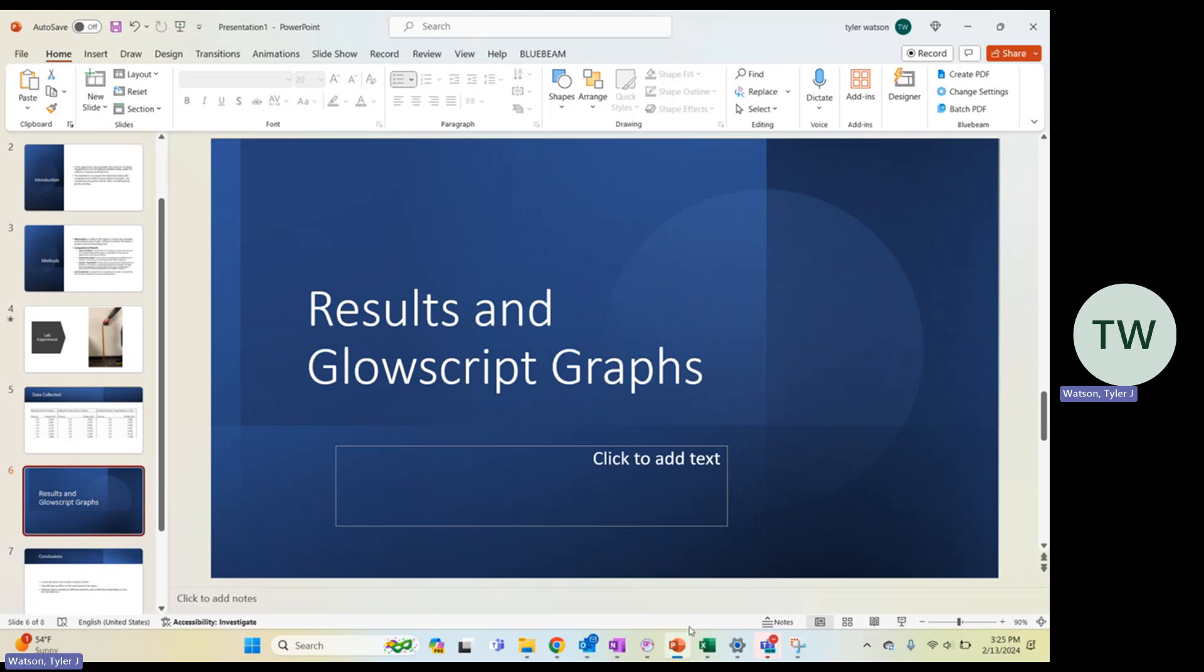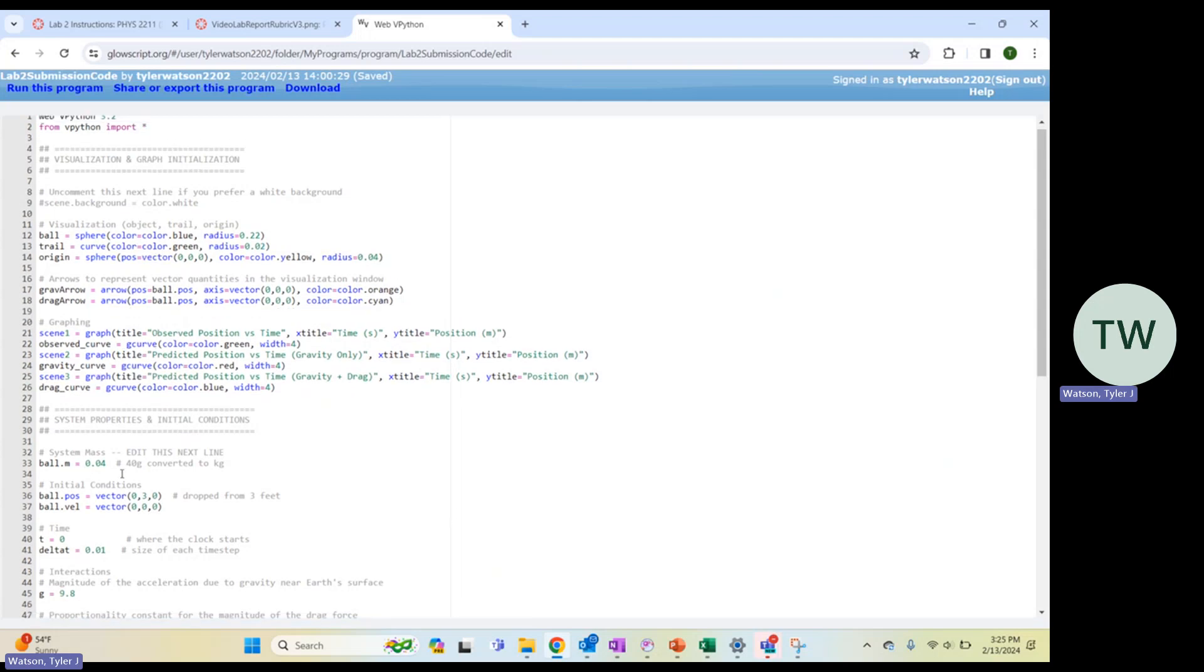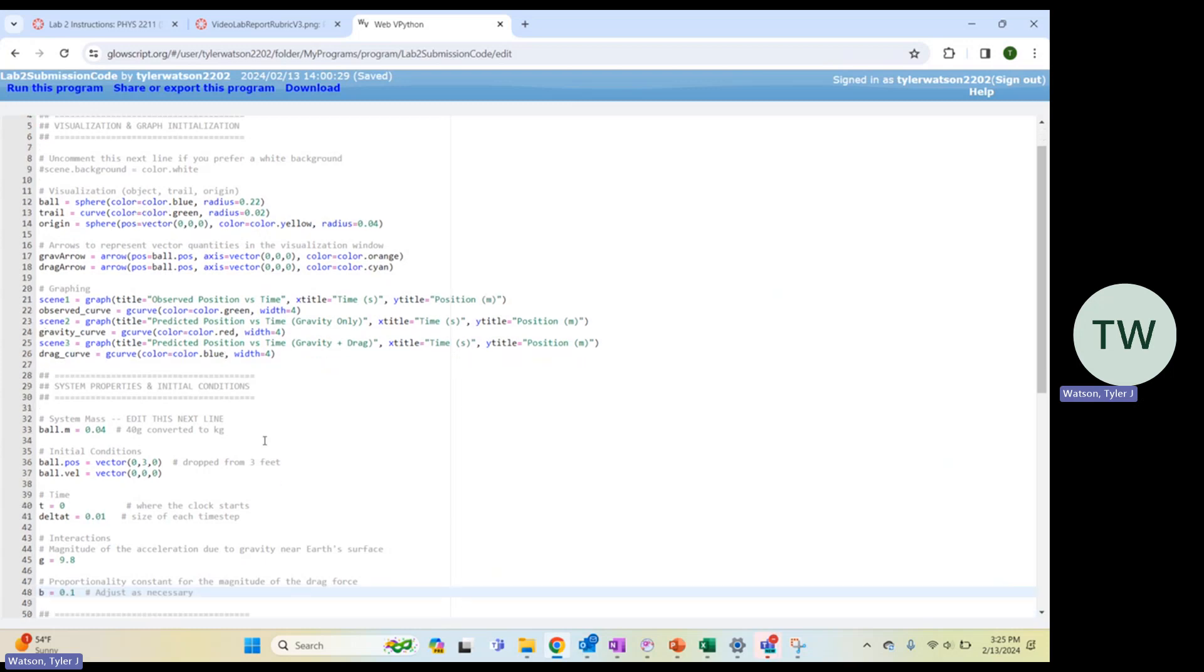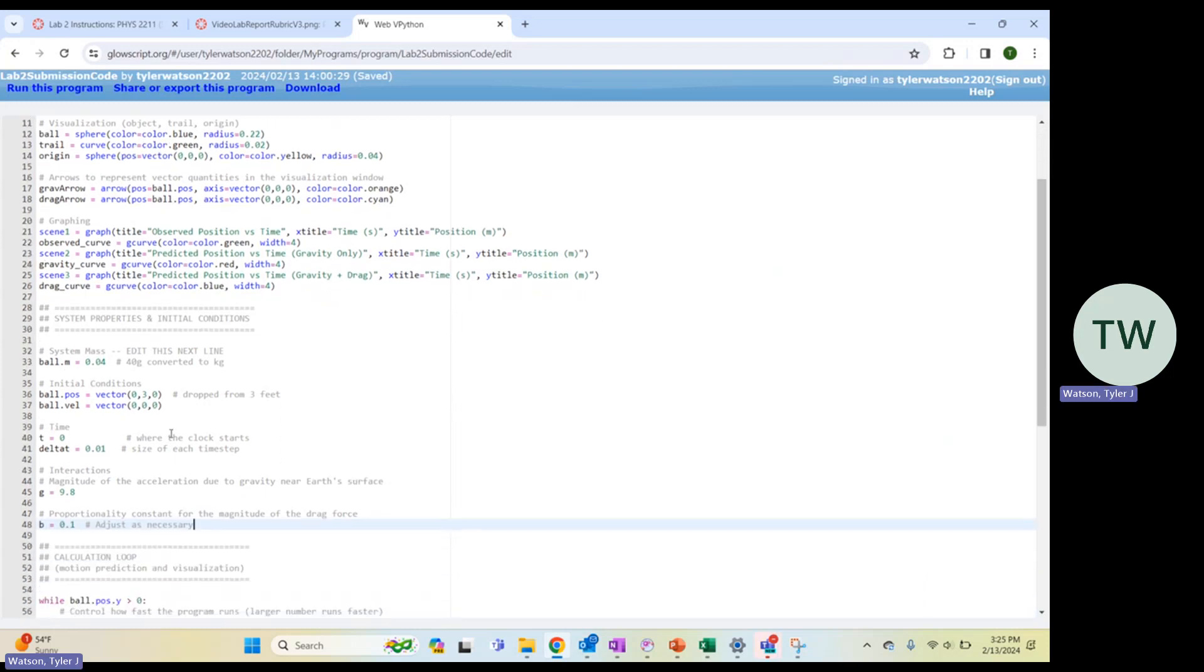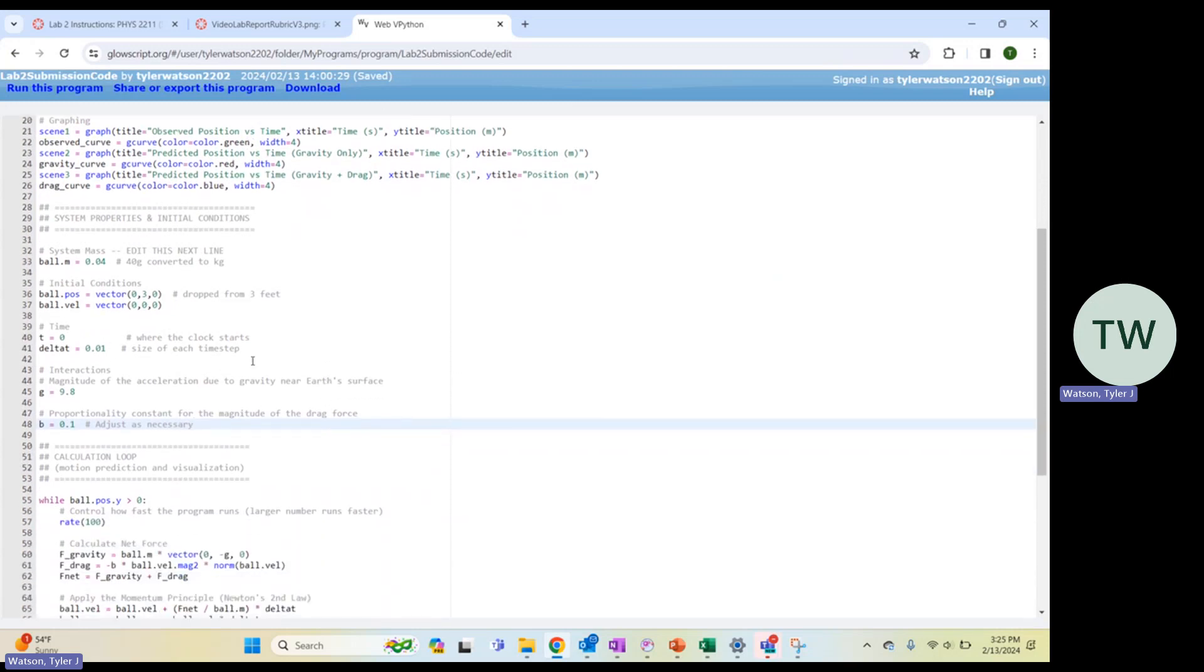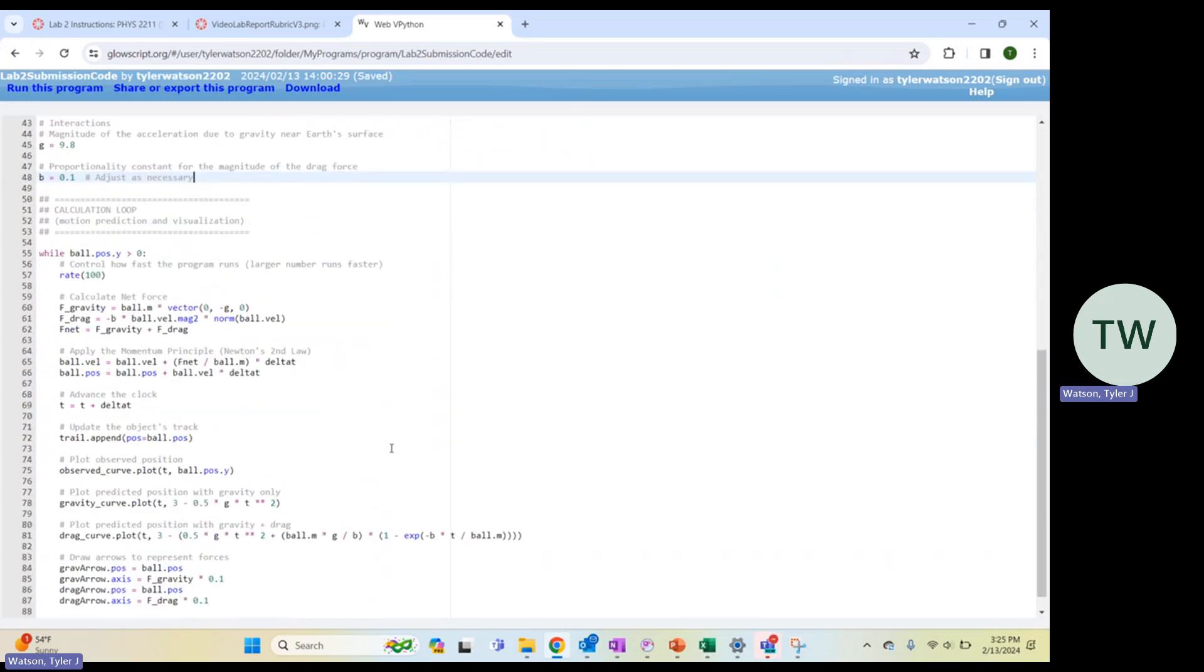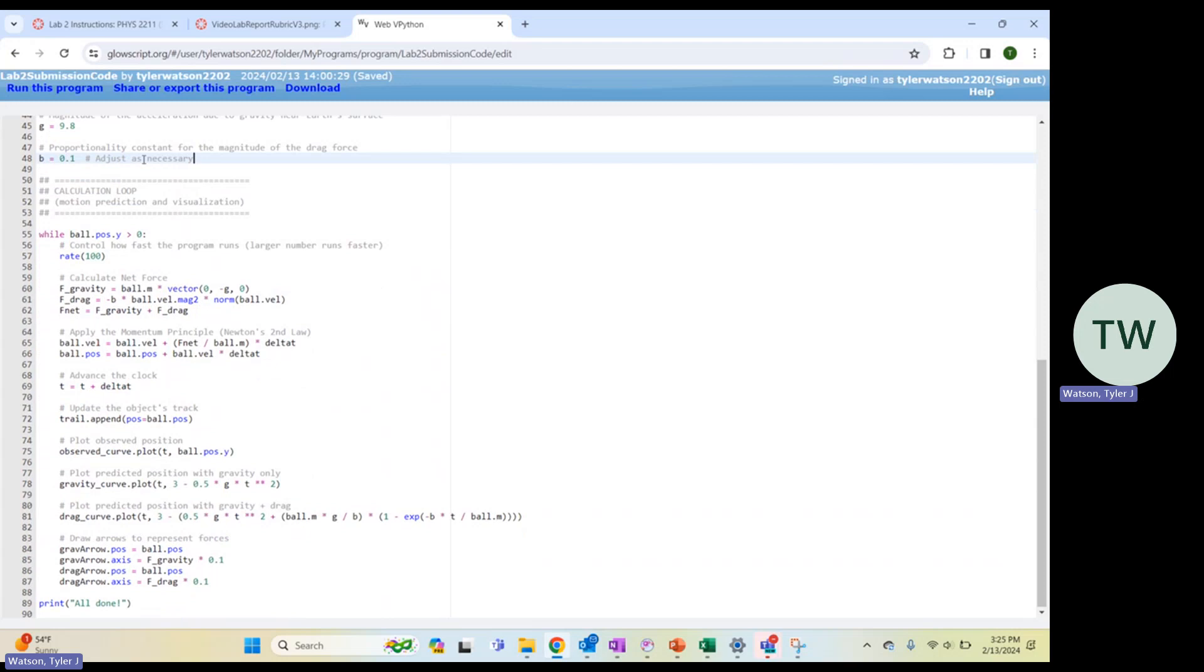I want to actually go show you the coding that I have here. So first thing to notice is that we converted our 40 grams into kilograms by making our mass 0.04. As you can see, our position vector is 0.30 as we dropped it from three feet. Each delta time step is 0.01 seconds. And down below, you can see our three different equations for these different graphs.